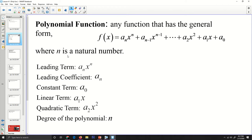So n has to be a natural number. The leading term will be a_n*x^n. The leading coefficient is a_n. The constant term, it's constant because it doesn't have a variable. The linear term is the term to the first power. The quadratic term is the term that's to the second power. And then the degree of the polynomial is n.